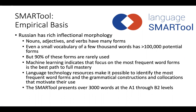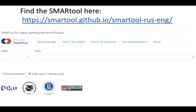The SMART tool presents all of this information for over three thousand word forms at the A1 through B2 levels. You can find the SMART tool here. It is a completely free resource and you do not need any password or login.